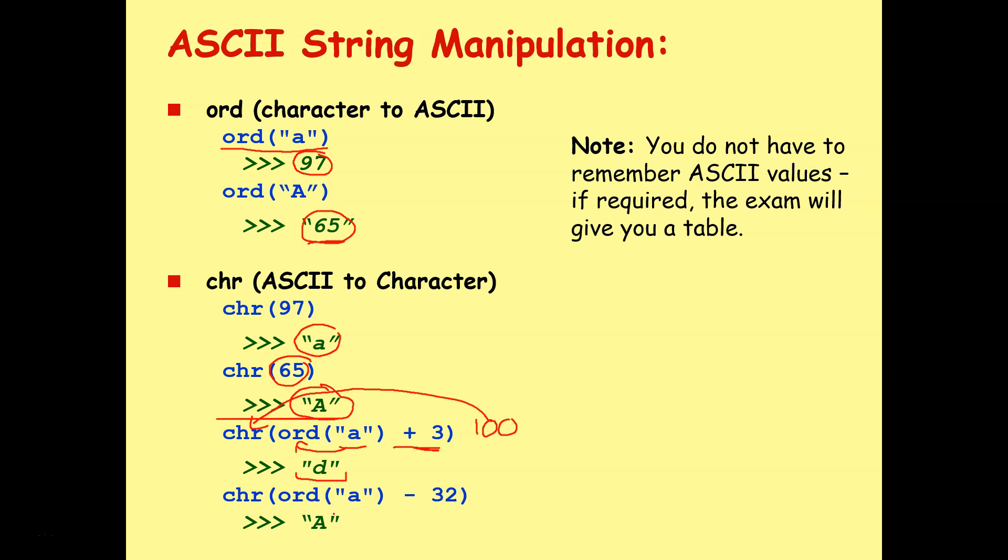If I take the character lowercase a and I convert it into an ASCII value, that will give me 97. If I then add 3 to that, that will give me 100. I can then take that 100, convert it back into a character using chr. And the ASCII and the character value for the ASCII 100 is the letter lowercase d. I can also convert between uppercase and lowercase using this old-fashioned method. So again, I take a lowercase a. I convert it into the ASCII value 97. I then subtract 32 from this to give me 65. I then take that 65, convert it using chr into a character again.